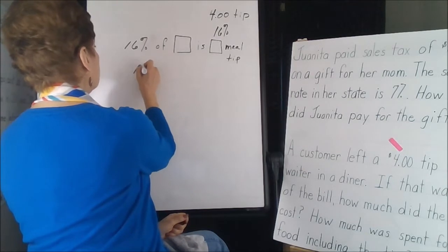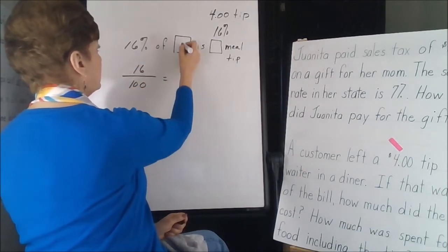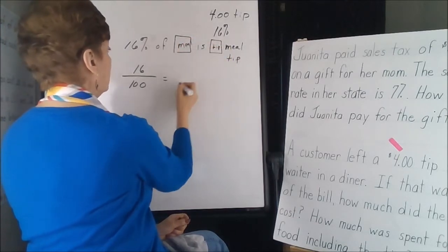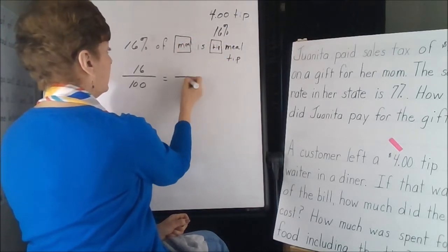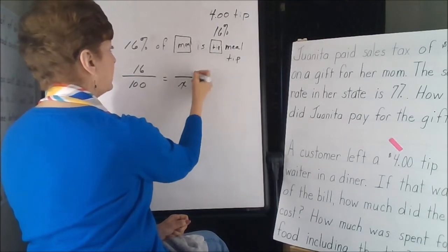So we have 16 over 100 is equal to, so this is meal and this is tip. The meal, we don't know about the meal, so we'll give that as our x, and the tip was $4.